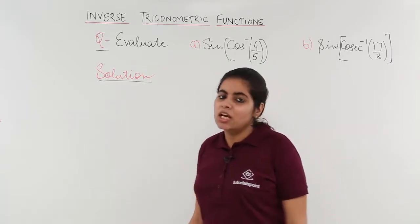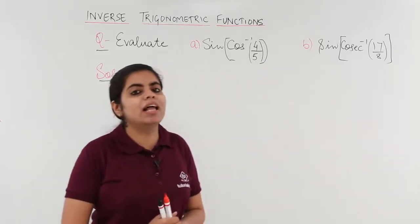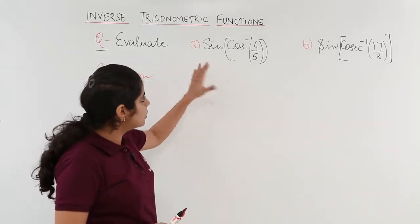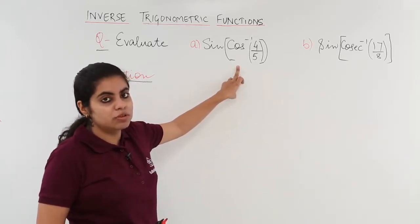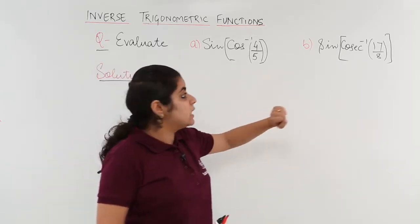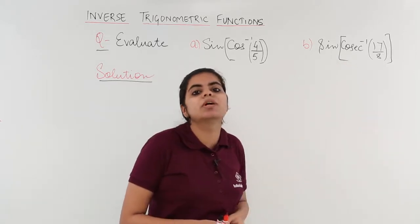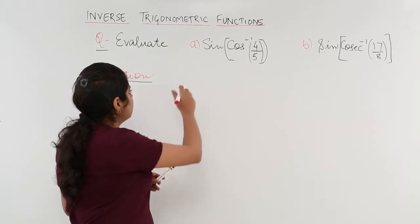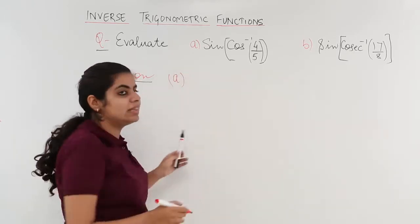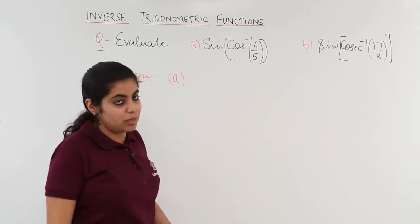Let's see what the question has to say. The question is a very simple evaluate or simplify type of question. Two parts are given to me. The first is sine cos inverse 4 upon 5. The second is sine cosec inverse 17 upon 8. Let's solve the first part first and then we move on to the second part.